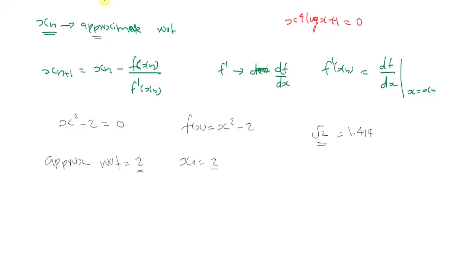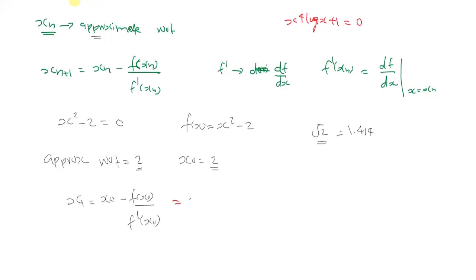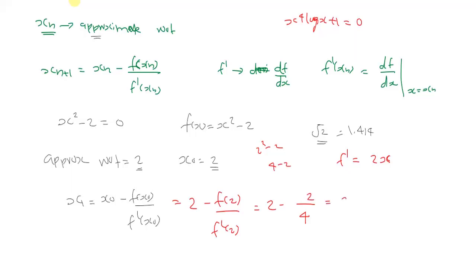With x0 = 2, the first iteration gives x1 = x0 - f(x0)/f'(x0). The derivative of x² - 2 is f'(x) = 2x, so f'(2) = 4 and f(2) = 2² - 2 = 2. Therefore x1 = 2 - 2/4 = 1.5.